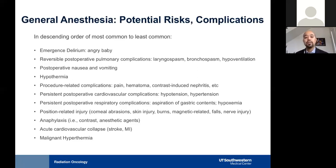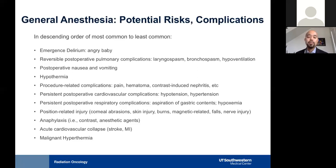Malignant hyperthermia is a rare genetic syndrome related to the ryanodine receptor in the muscle cell, occurring in approximately 1 out of 30,000 to 50,000 general anesthetics. It can be associated with a variety of syndromes and is always assessed during the preoperative anesthetic evaluation. If volatile agents are used, a malignant hyperthermia cart should be accessible — typically available near an operating room, but this must be verified beforehand.